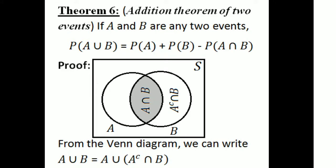The addition theorem of 2 events states: if A and B are any 2 events, then the probability of A union B is provided. If A and B are disjoint events, meaning A intersection B is equivalent to phi, then the probability of A union B simplifies accordingly.